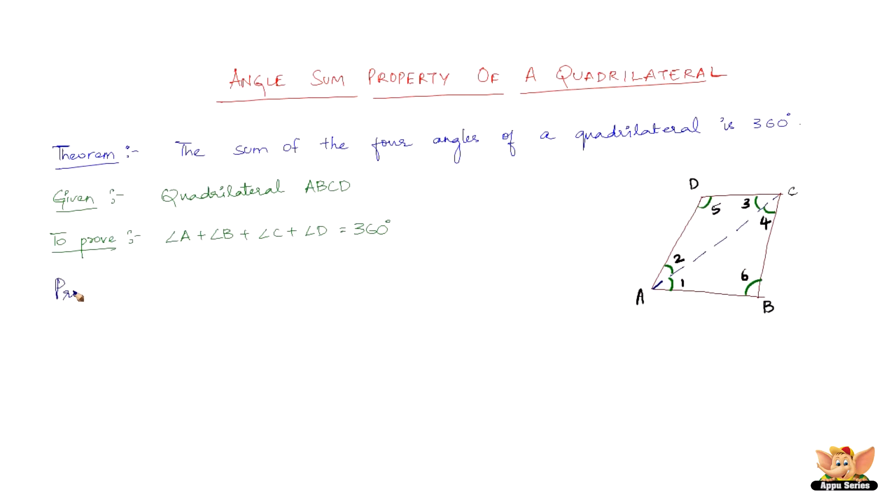Now let us go to the proof. The proof is in the triangle ABC. We can easily say that angle 1 plus angle 4 plus angle 6 equals 180 degrees. And then in triangle ACD, angle 2 plus angle 3 plus angle 5 equals 180 degrees. So let us consider this as equation 1 and let us consider this as equation 2.